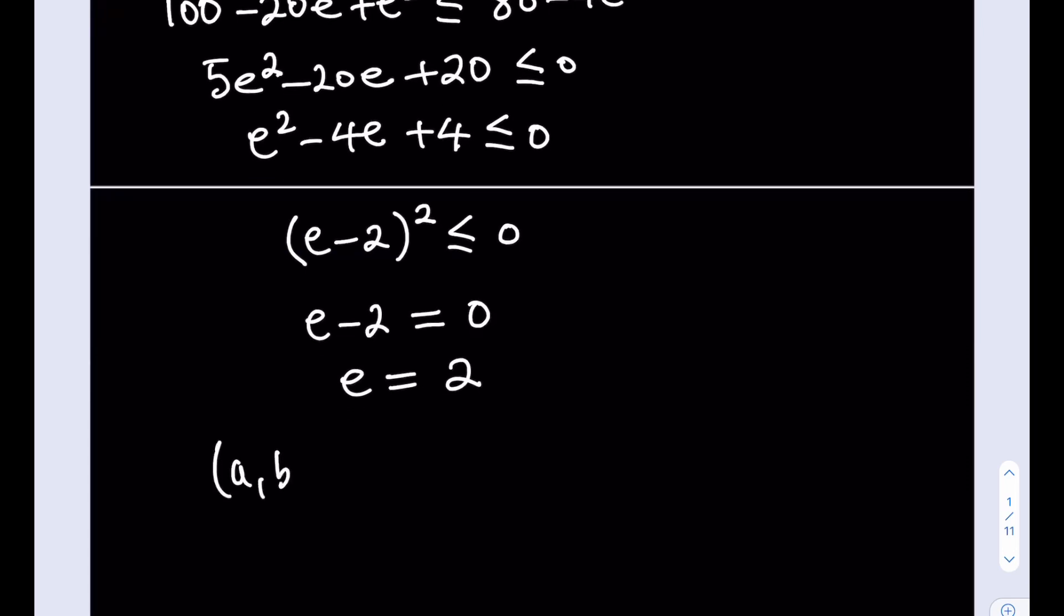our solution as an ordered quintuple is going to be (2, 2, 2, 2, 2). In other words, all these variables are going to equal 2, and that's going to be the only real solution to this system of equations.